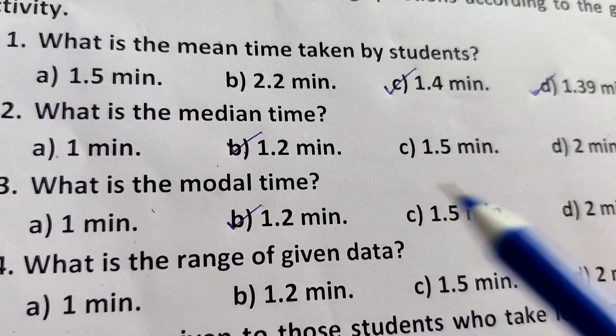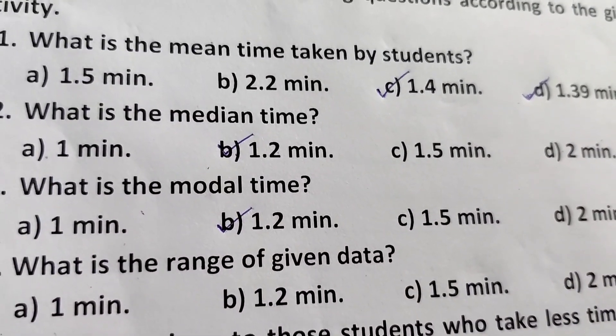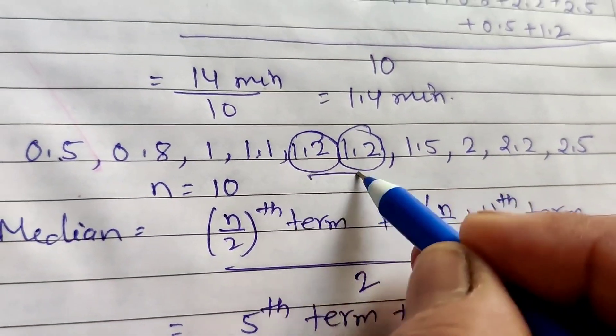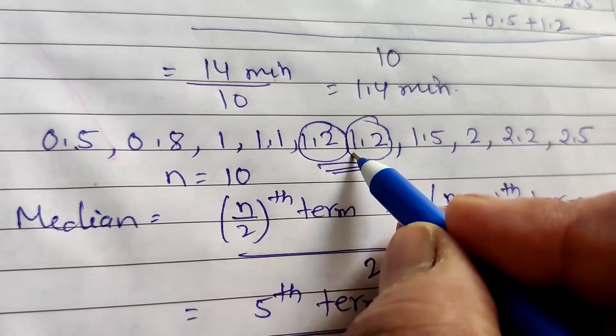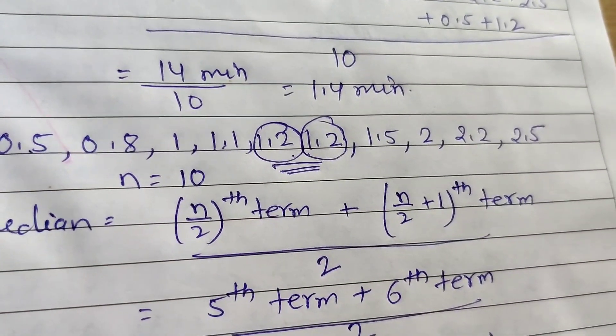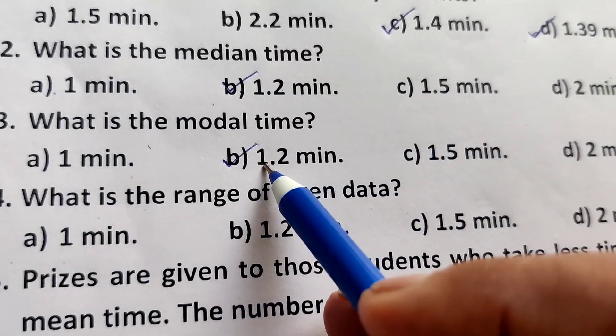Next, what is the modal time? The maximum frequency in this data: 1.2 occurs most frequently, it means 2 times. Therefore, mode equals 1.2 minutes.